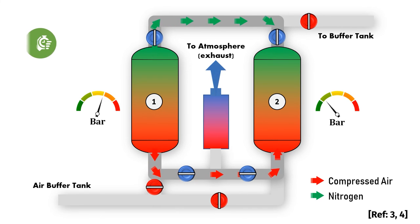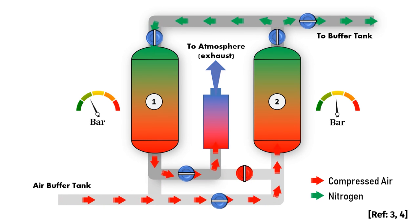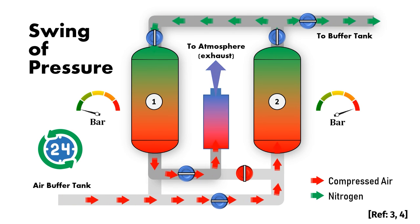After a certain period, the pressure in both towers will equalize and they will change phases from adsorbing to regenerating and vice versa. Therefore, compressed air will enter Tower 2, which due to the depressurization is able to restart the adsorption process. This is referred to as swing of pressure. Eventually, the two-tower PSA system allows for continuous nitrogen production at a desired purity level.